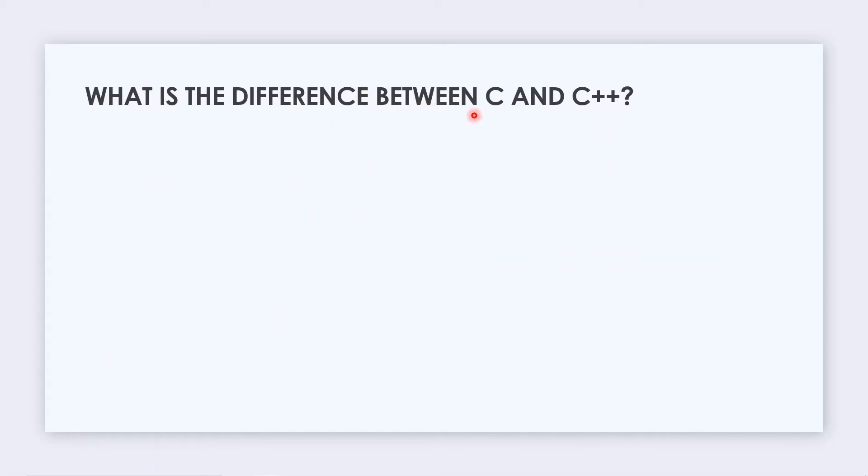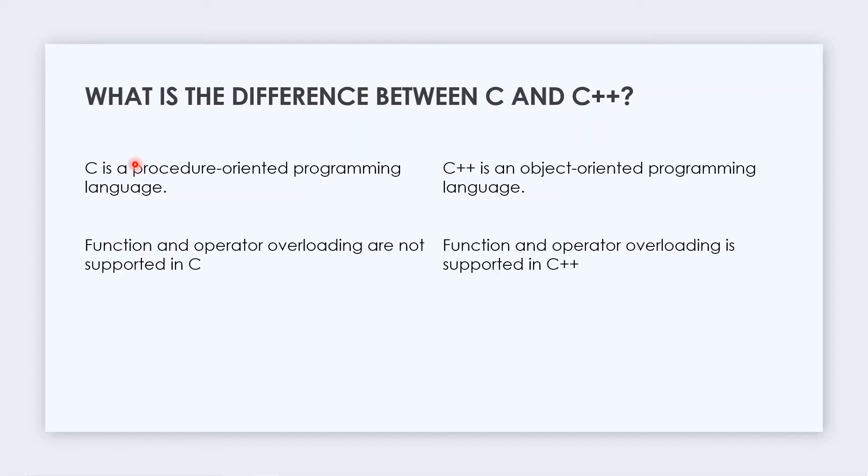The next question is: What is the difference between C and C++? C++ is derived from C with certain advantages. The first difference is C is a procedure-oriented programming language while C++ is object-oriented. C++ revolves around objects and uses code reusability, which is an advantage over C. The second difference is that function and operator overloading are not supported in C but are supported in C++.